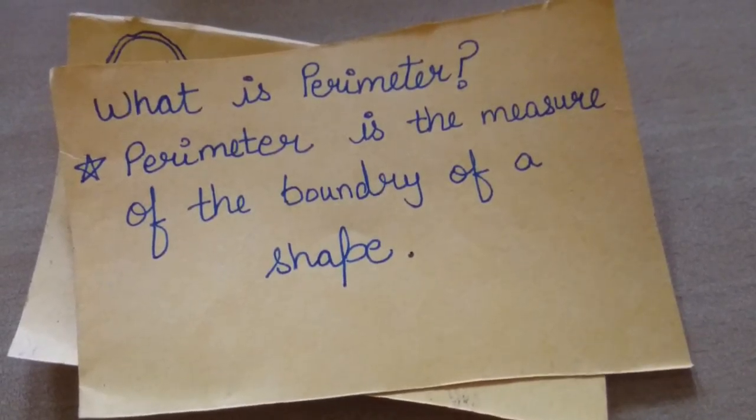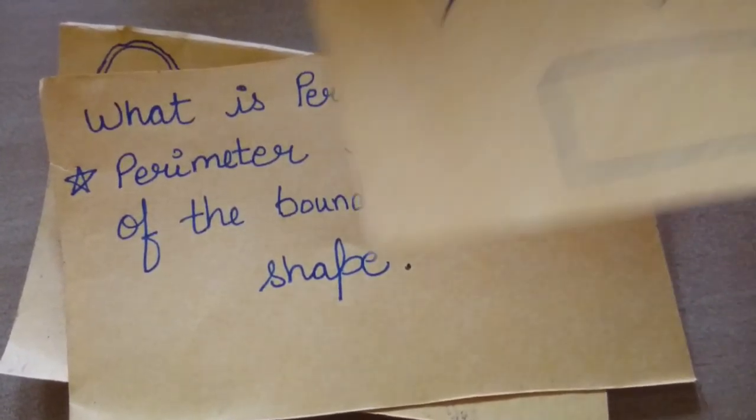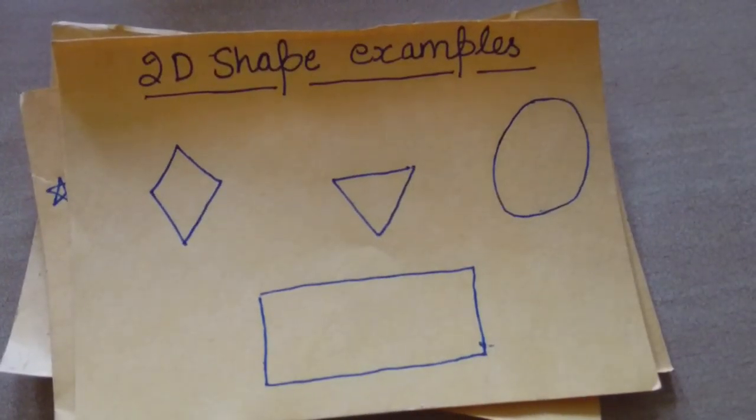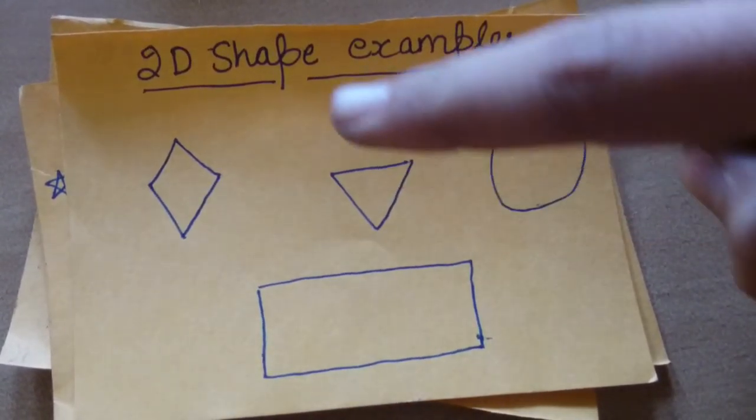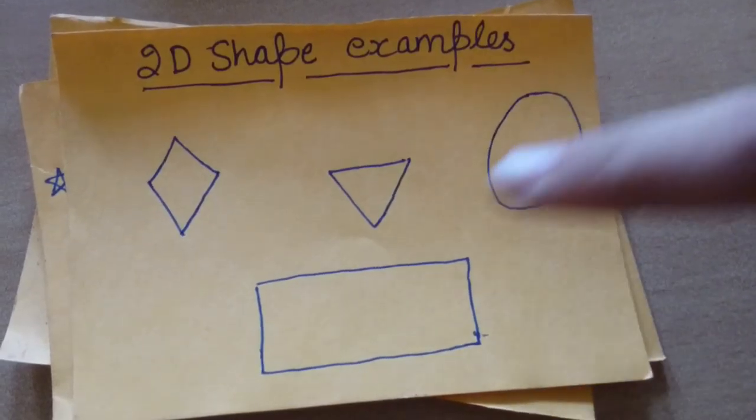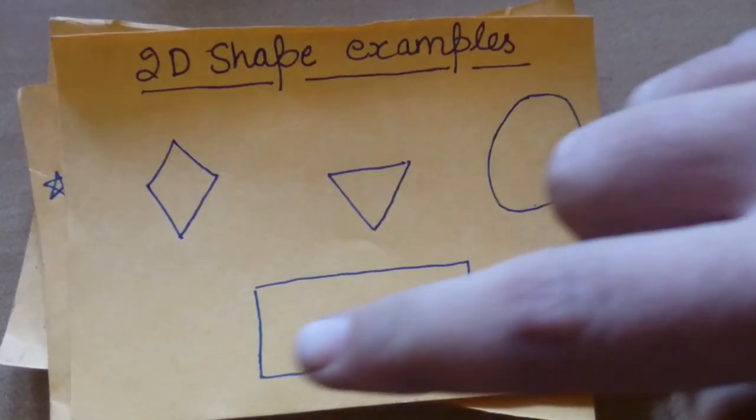Let's clarify it better by taking some examples. These are some 2D shapes. When we go around these shapes, we go around the perimeter of these shapes, that is the boundary.